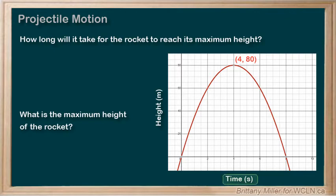How long means time, which is our x-axis, or our t-axis, since the variable is t for time. So, after 4 seconds, the rocket will reach maximum height.